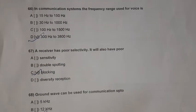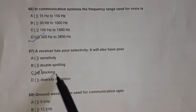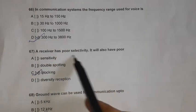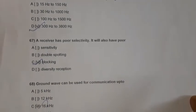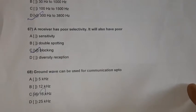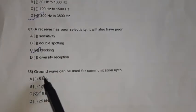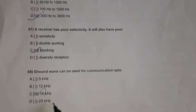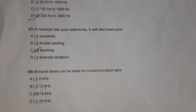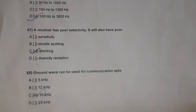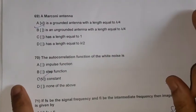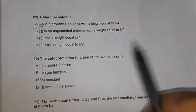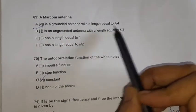Question 67: A receiver with poor selectivity will also have poor blocking. Question 68: Ground wave can be used for communication up to 16 kilohertz. Question 69: A Marconi antenna is a grounded antenna with a length equal to lambda/4.